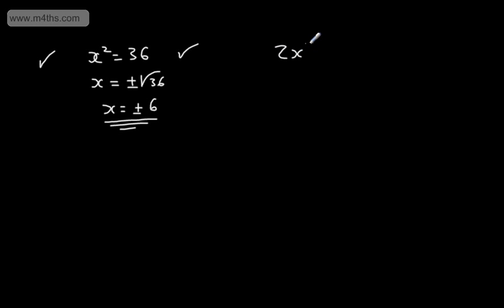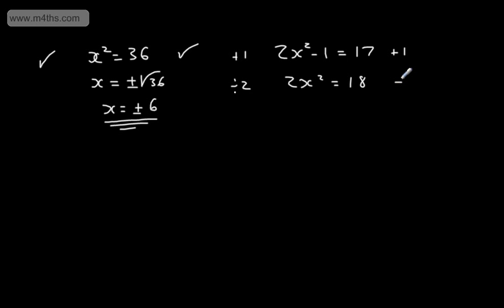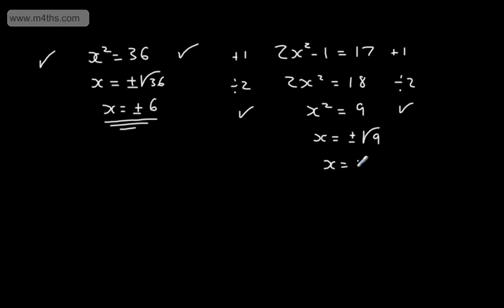Another example might be 2x squared minus 1 is equal to 17. I would add 1 to both sides of the equation, giving me 2x squared is equal to 18. I would divide both sides by 2, giving me x squared is equal to 9. Taking the square root of both sides gives x is equal to plus or minus 3. So that gives us our two solutions.